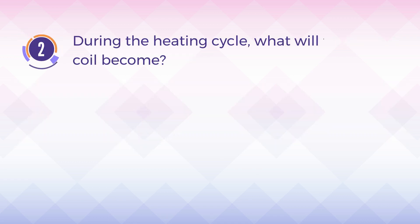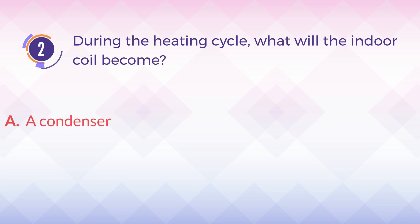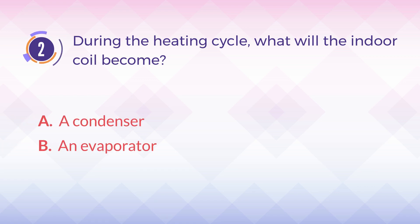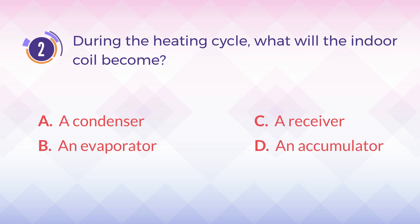Number 2. During the heating cycle, what will the indoor coil become? A. A condenser. B. An evaporator. C. A receiver. D. An accumulator.